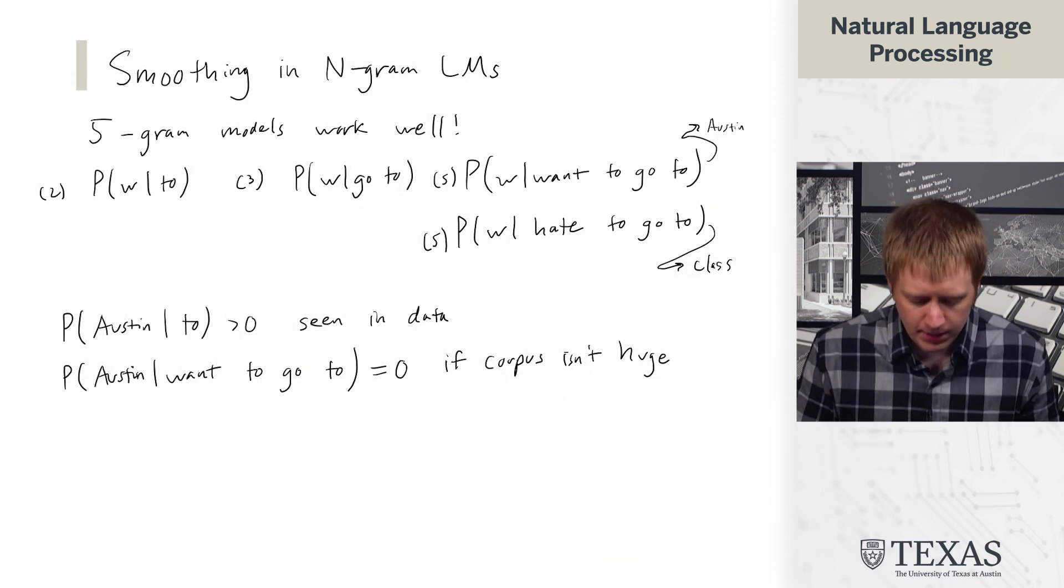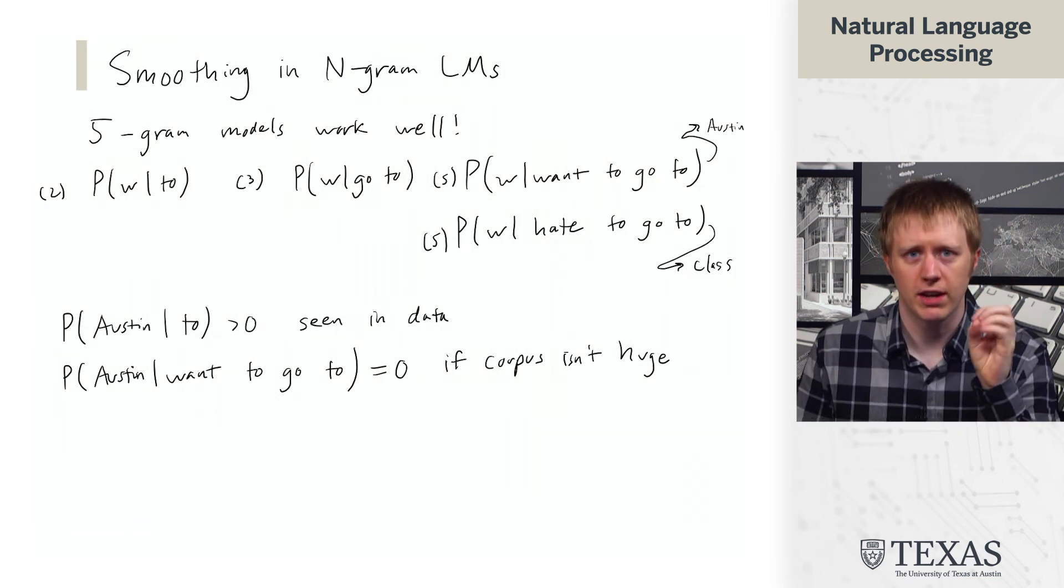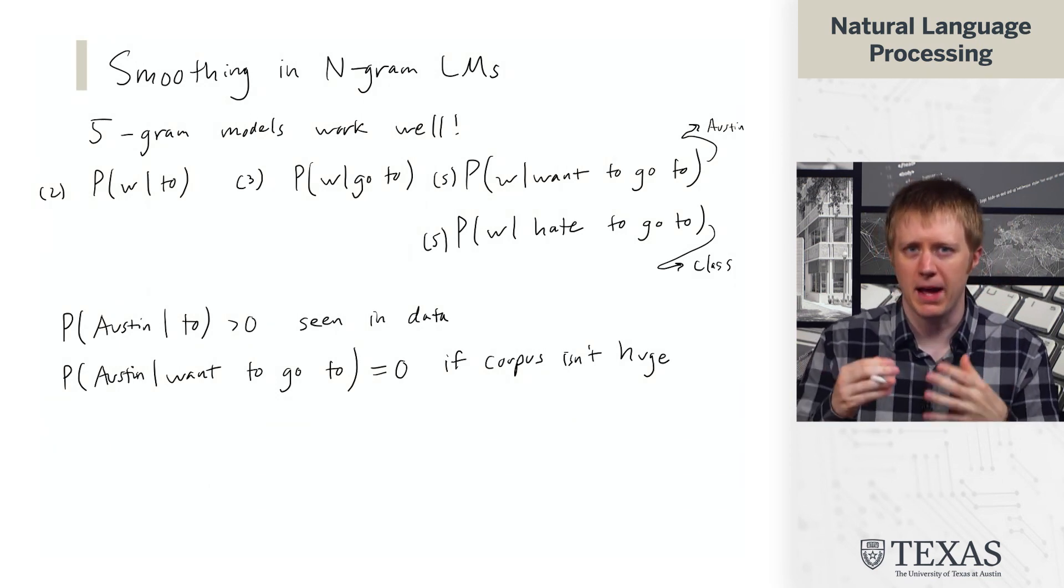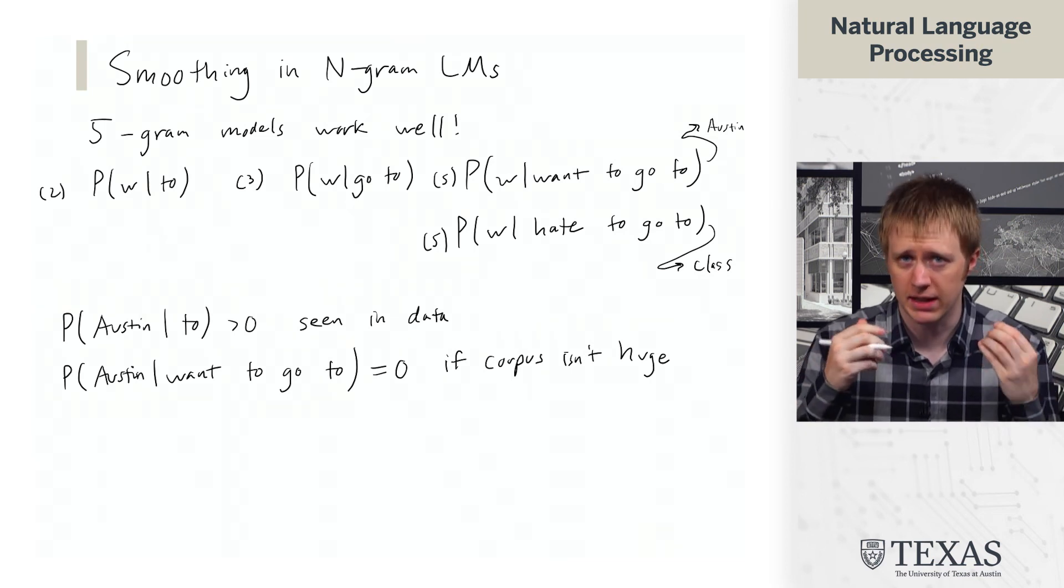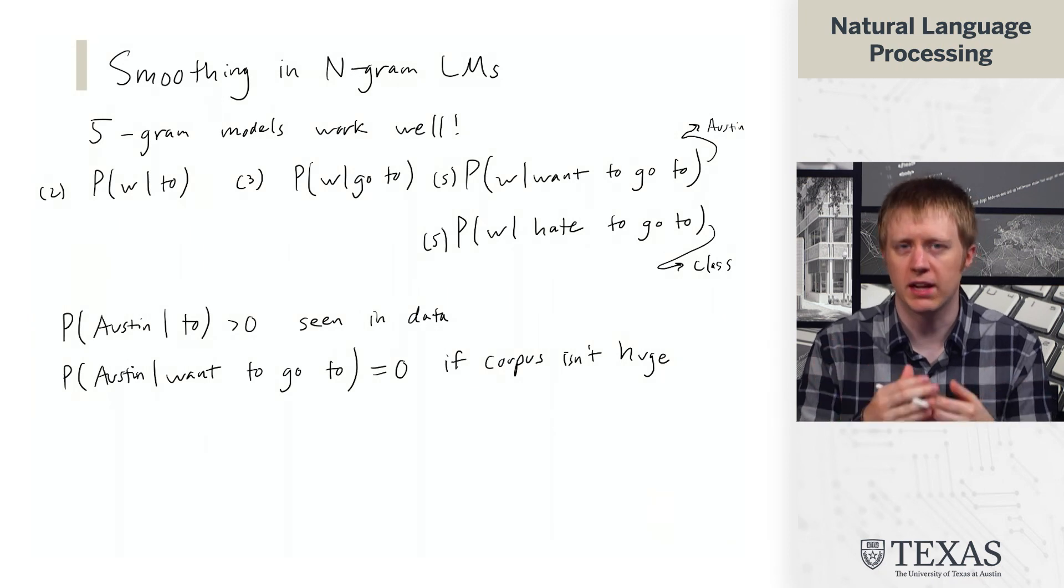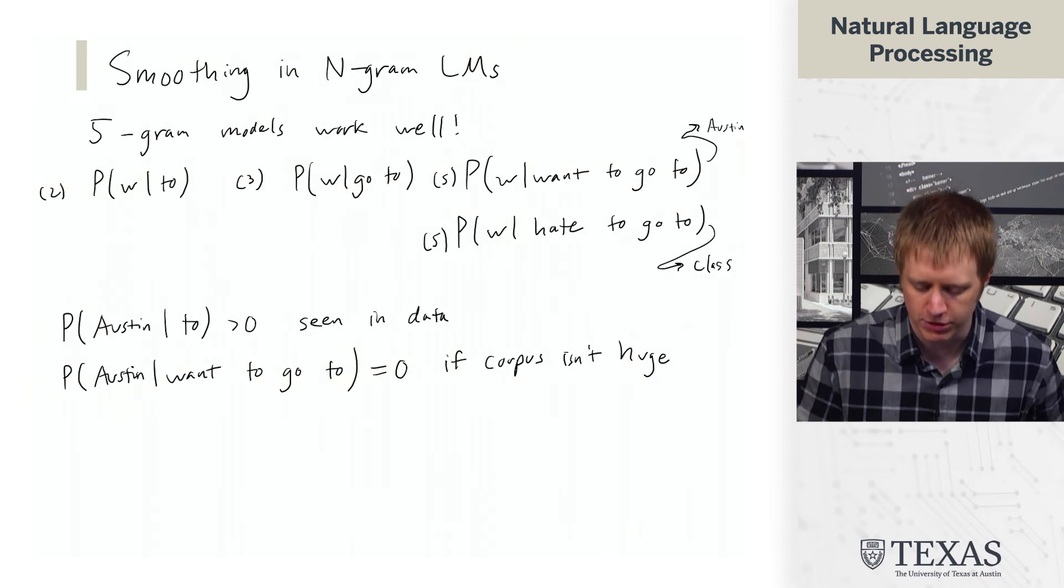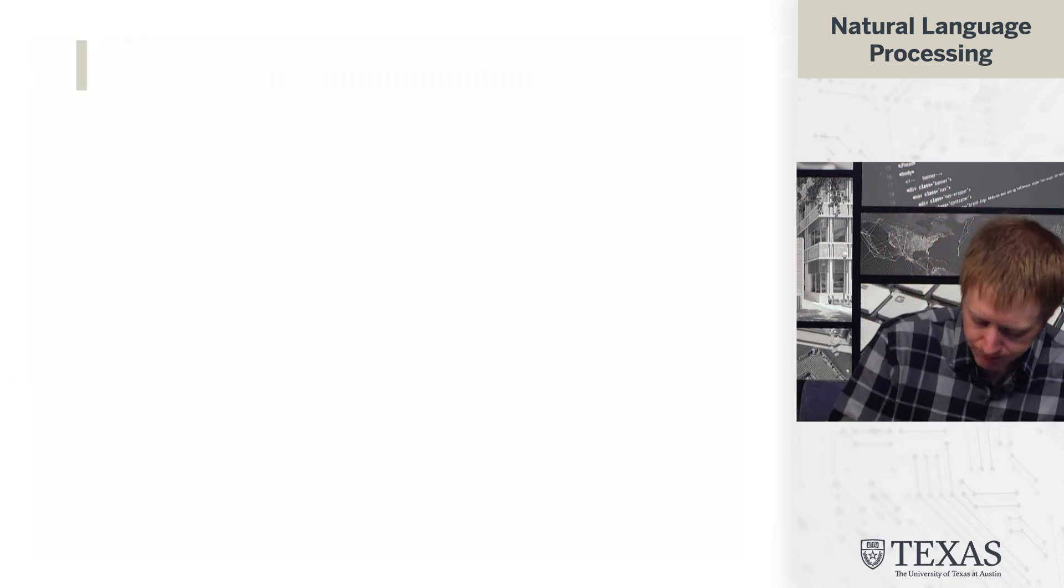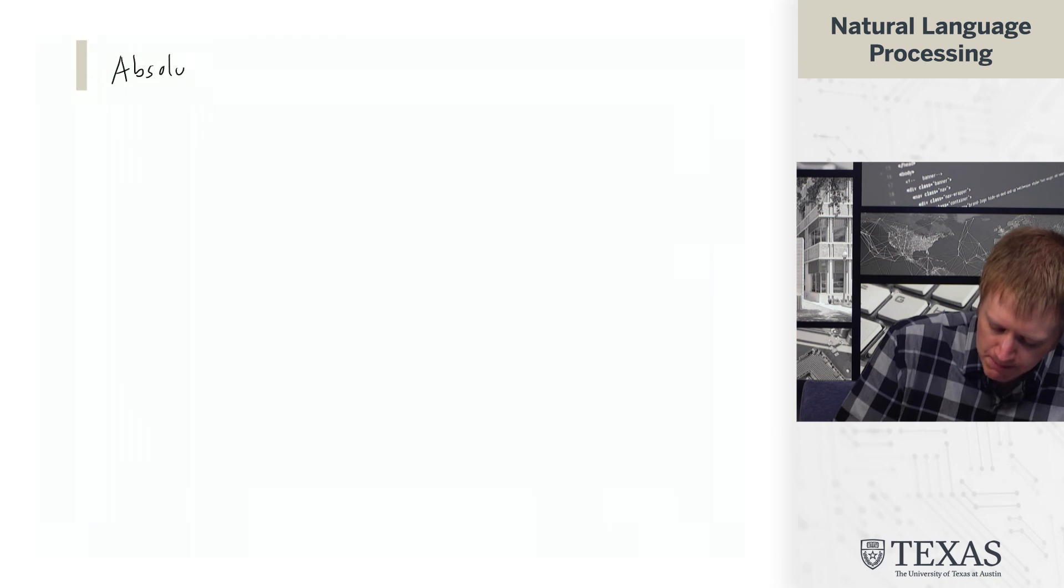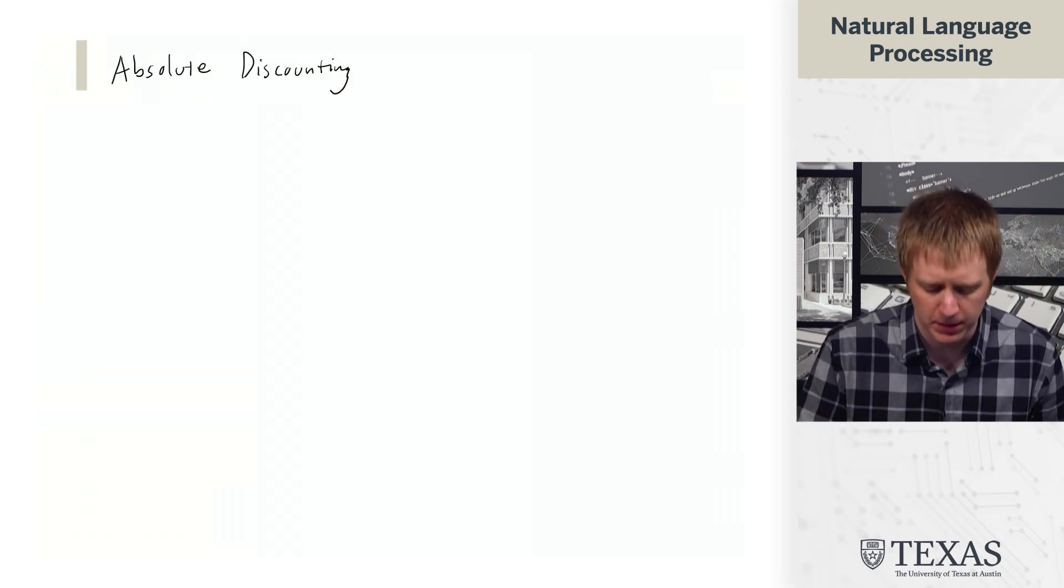So this is going to be the idea behind smoothing. So there are many techniques for figuring out how to reserve some probability mass and basically give a small amount of probability to these unseen instances so we can not judge them as totally impossible if they come along in future data. So the scheme that we're going to talk about is called absolute discounting. And I'm just going to give you the high-level picture of what's going on here so you understand what this family of techniques looks like.